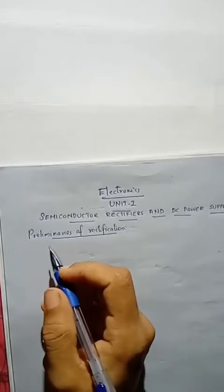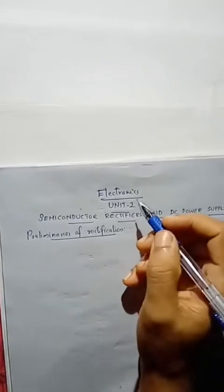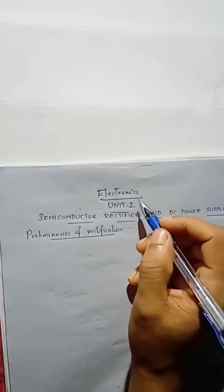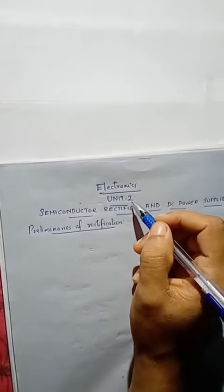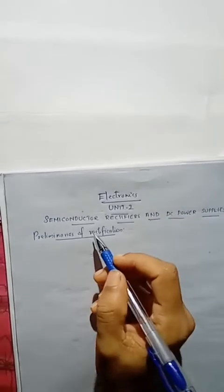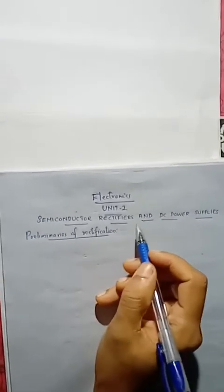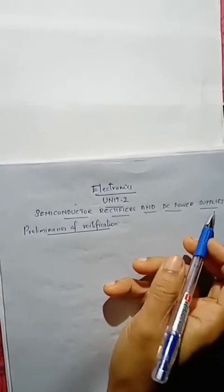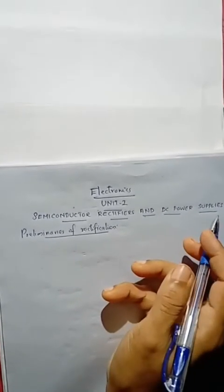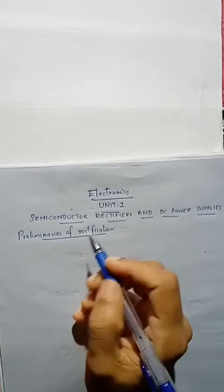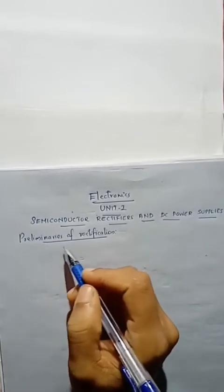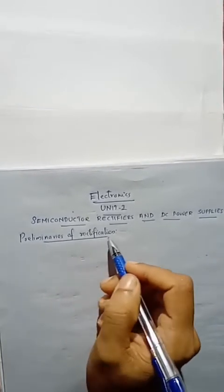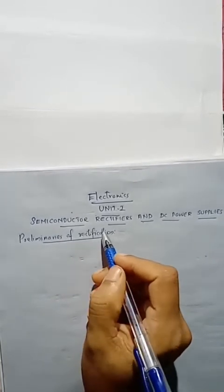Dear students, in our Electronics Unit 1 on Semiconductors, Rectifiers and DC Power Supplies, the first topic is Preliminaries of Rectification.